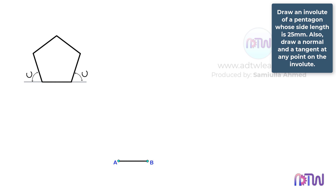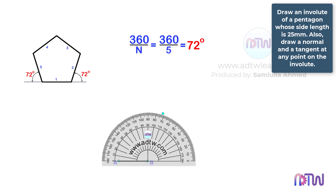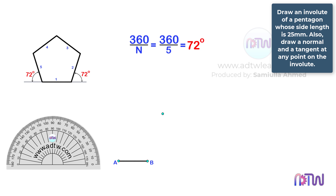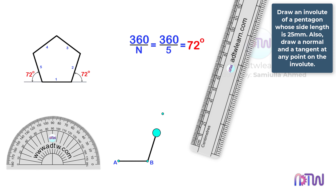Next, we need to know these angles. To get this angle, we need to divide 360 degrees by N, where N is the number of sides of a given polygon. Here, the number of sides is 5, therefore we have 360 divided by 5, which equals 72 degrees. Therefore, this angle is 72 degrees. Take a protractor, keep it at this point, and mark a point at 72 degrees. After this, using this point as a reference, draw a line of 25 mm in length. Label this point as C.